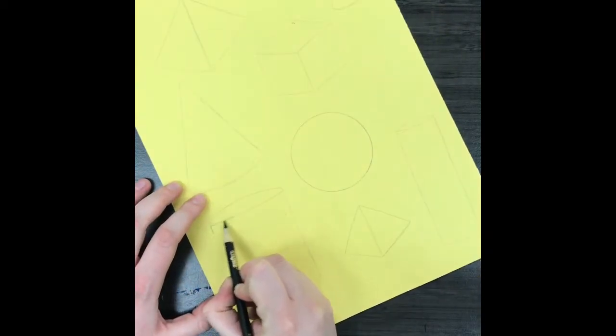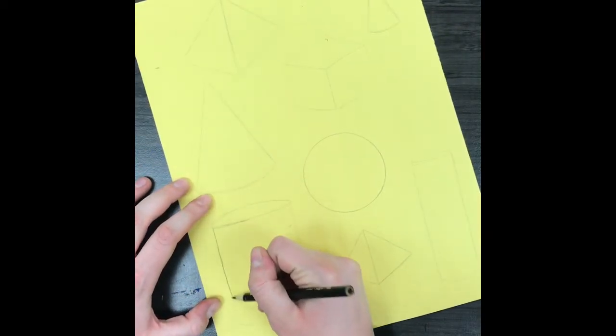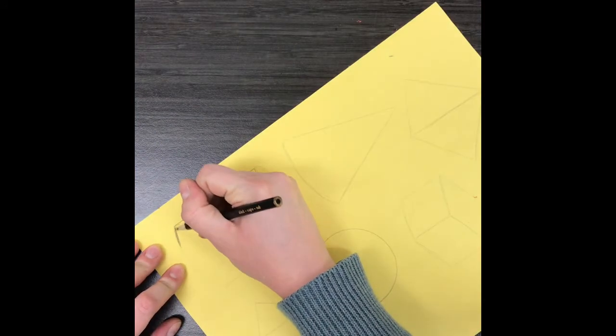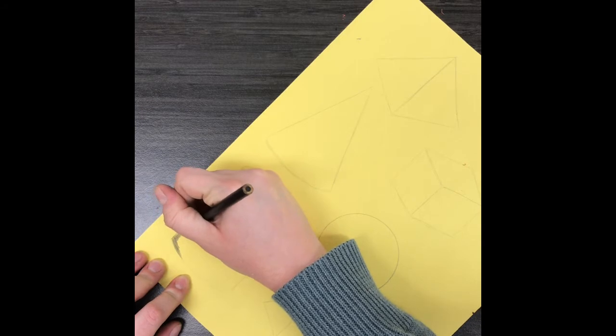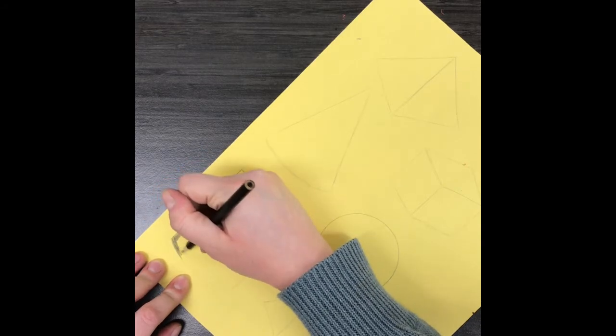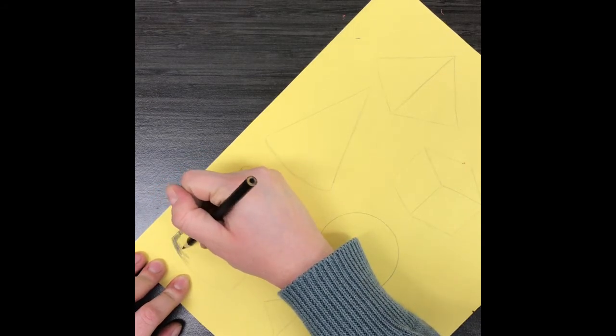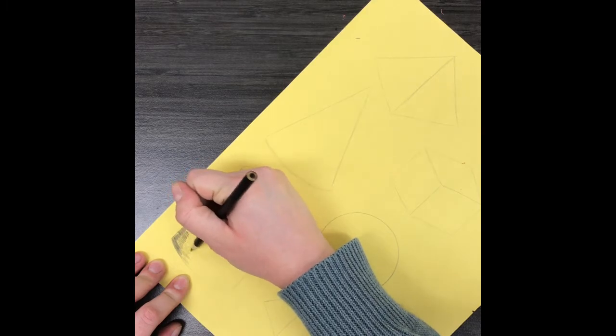Next I'm going to start shading. So you could either use just a regular pencil for this or you could use a black colored pencil. I'm using a black colored pencil because I think that shows up really well. But if you're more comfortable with just using a pencil, that's totally fine too.